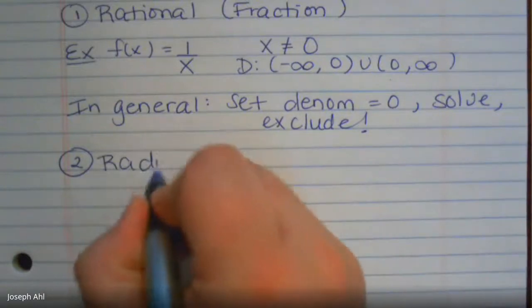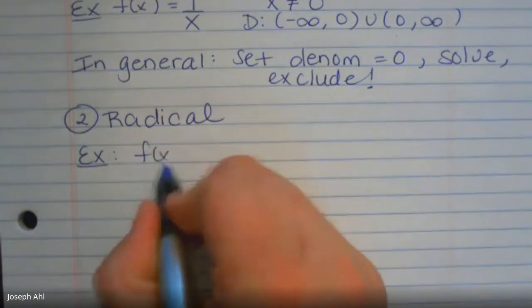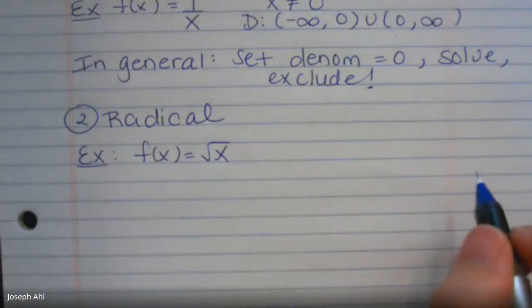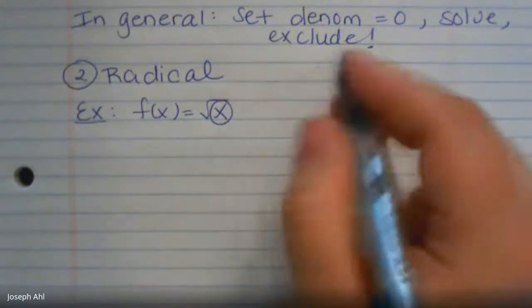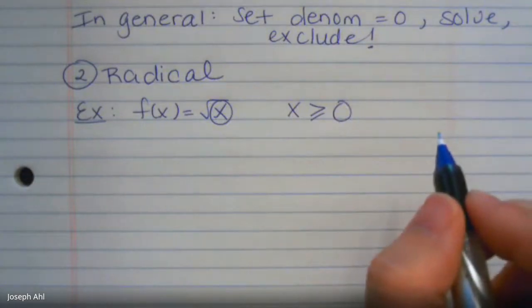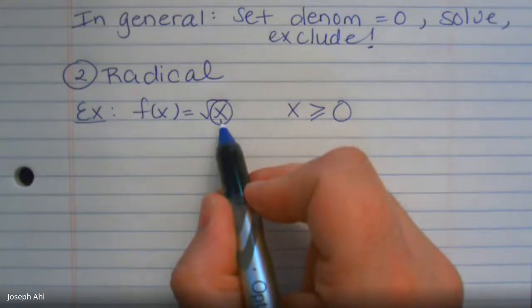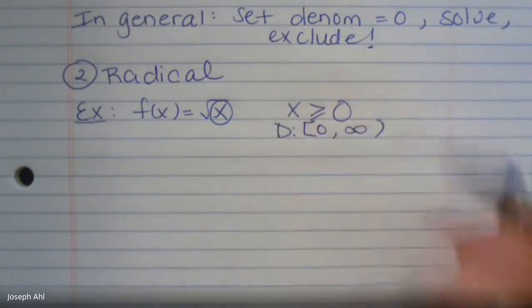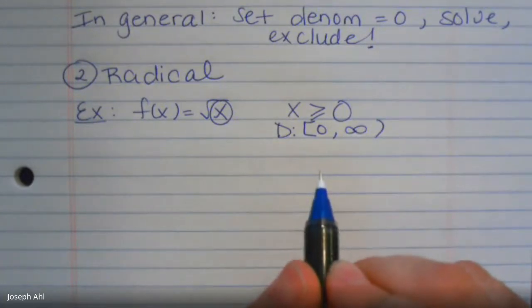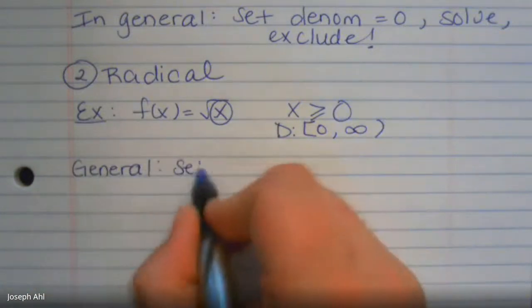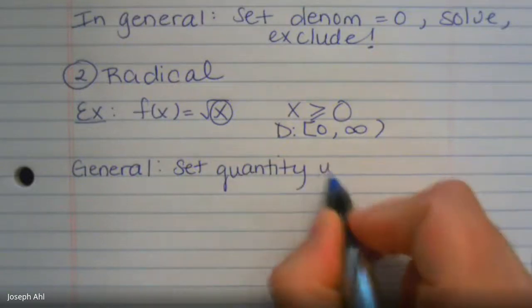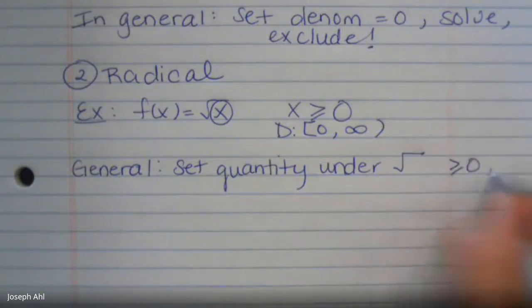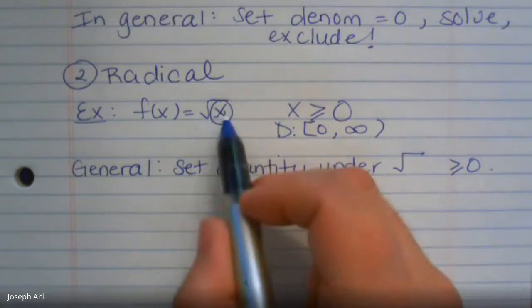Case two: radical functions. Starting with the most basic case, f(x) = √x. We can't take the square root of something negative, so we look at the quantity under the radical and set it to be greater than or equal to zero. Whether it's x or something like 3x - 7, set that expression ≥ 0. In interval notation that looks like [0, ∞). The general rule: set the quantity under your radical to be greater than or equal to zero.